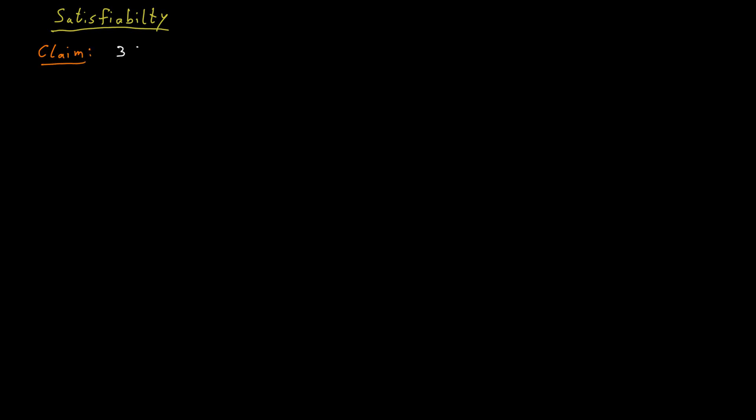Now, this problem 3-SAT polynomial time Karp reduces to independent set. This is not obvious because 3-SAT looks very different as a problem to independent set. But we can do something that's called a gadget construction to show this.